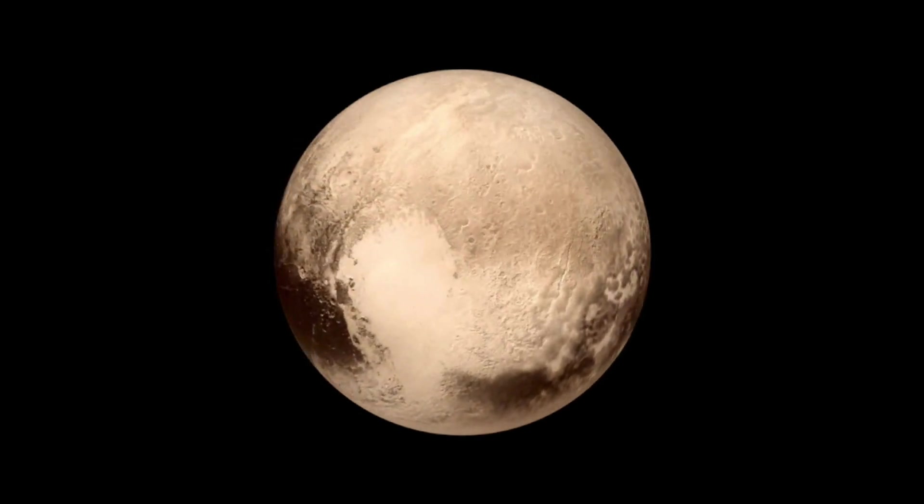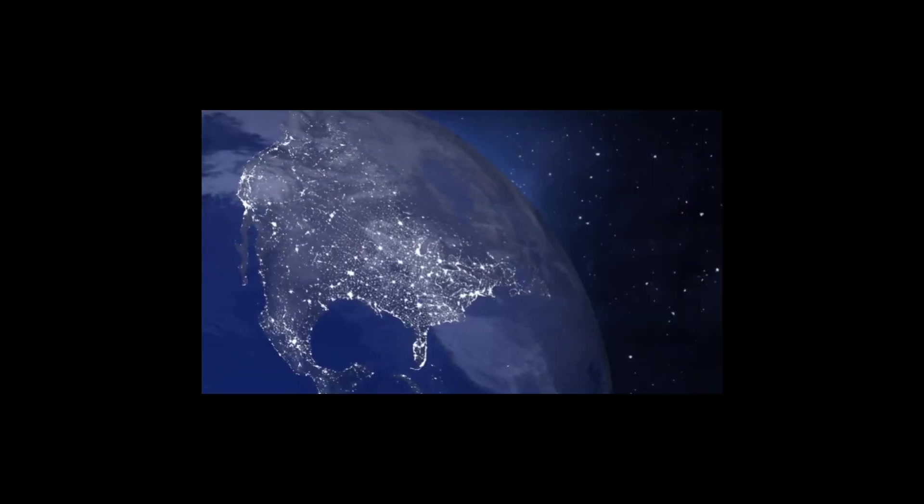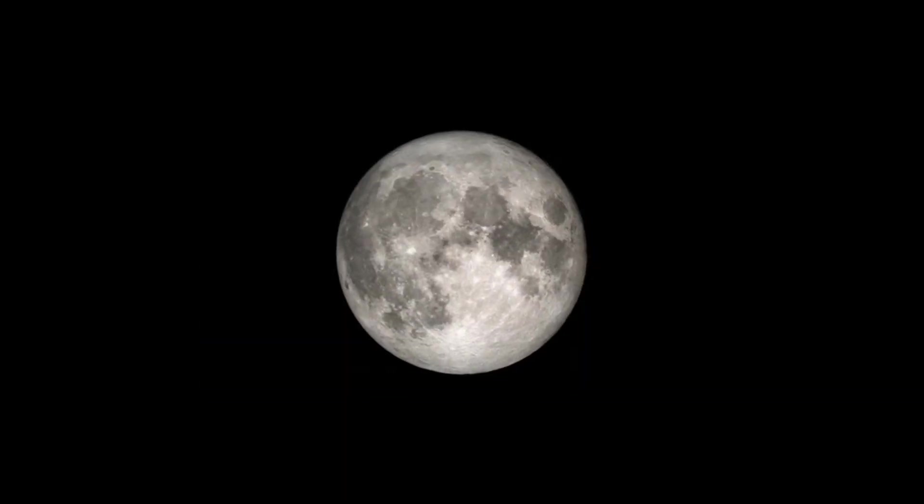Pluto is around 1,400 miles wide. That is about half the width of the United States, along with two-thirds the width of our moon.